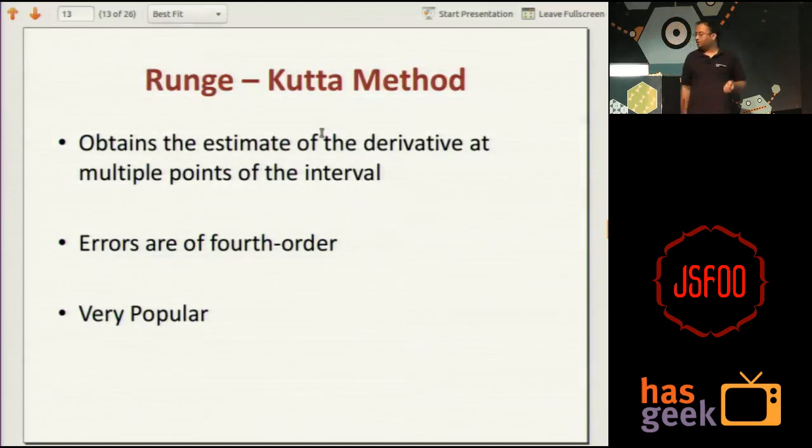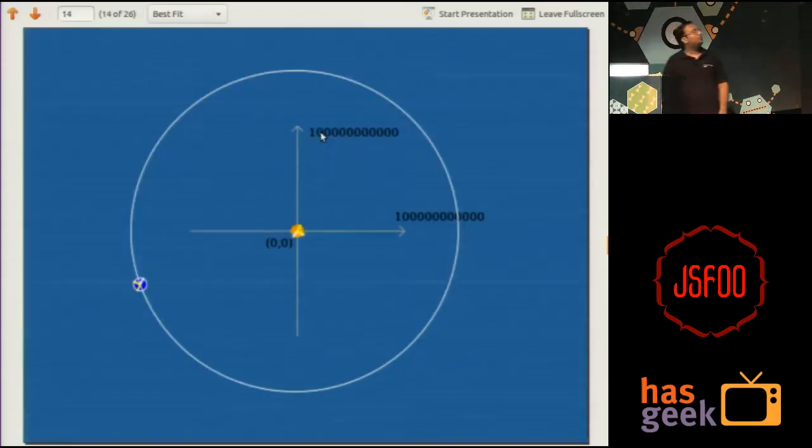There are much better methods and they are not really that complicated. So, second one is Runge-Kutta method, which is the fourth order method. So, you measure the, you estimate the derivative at multiple points of the interval and so, you get a better estimate where errors are of fourth order and it is really simple, really popular. So, what happens when we use Runge-Kutta method? Now, we have a satisfactory orbit. If you zoom in to this, there is still some errors, but this is fine. In this case, I am using a time step of one day. So, one degree is what every time step is.